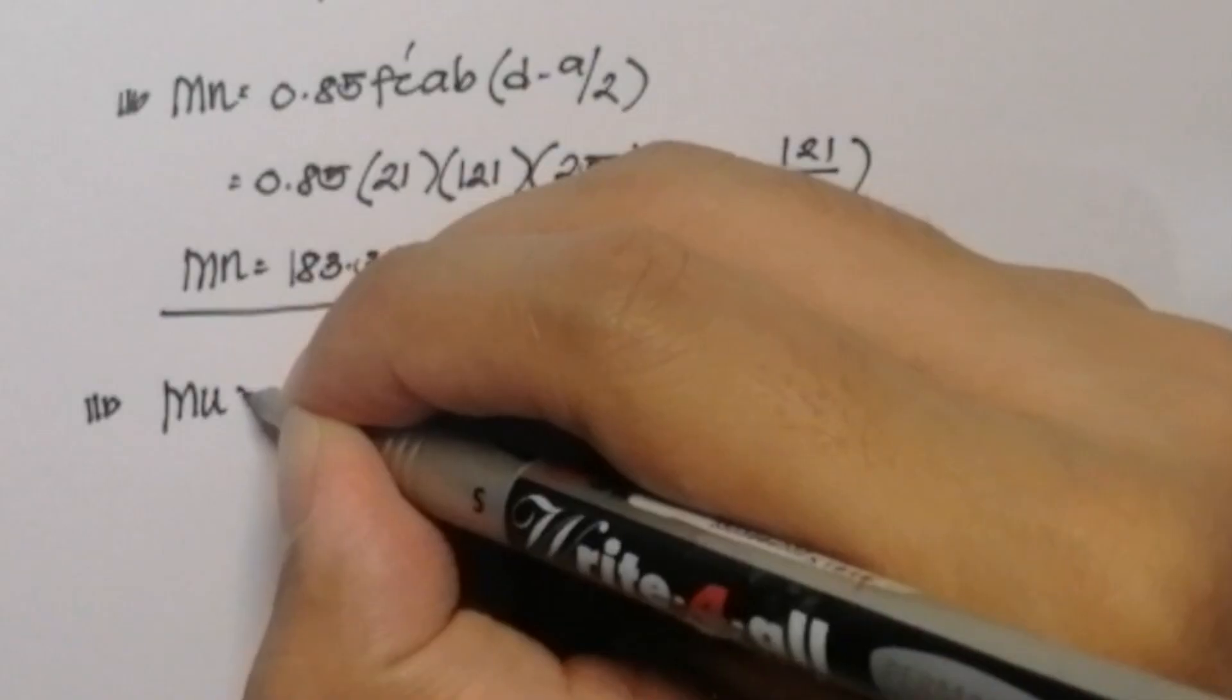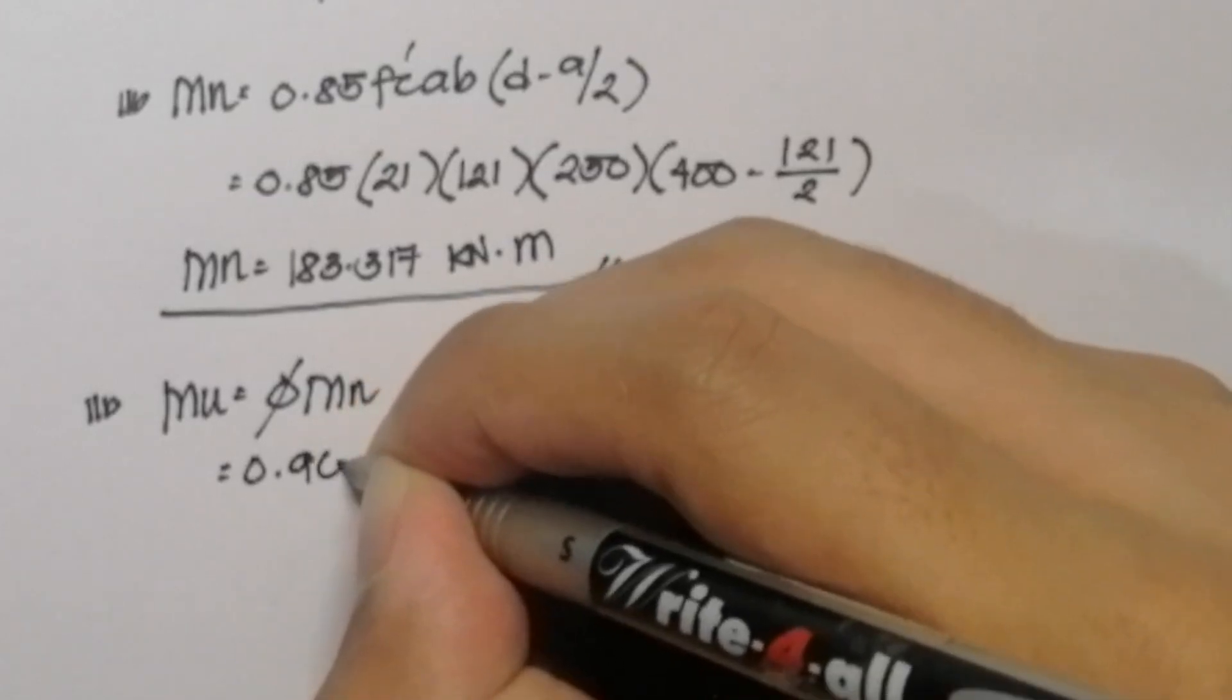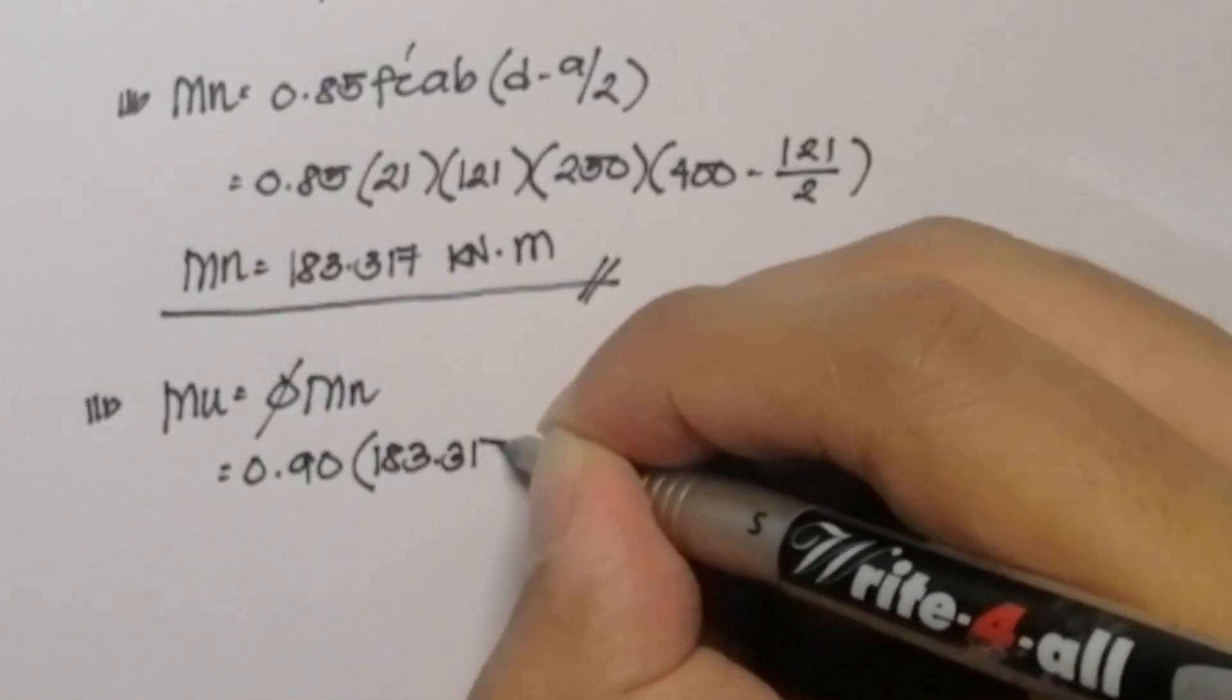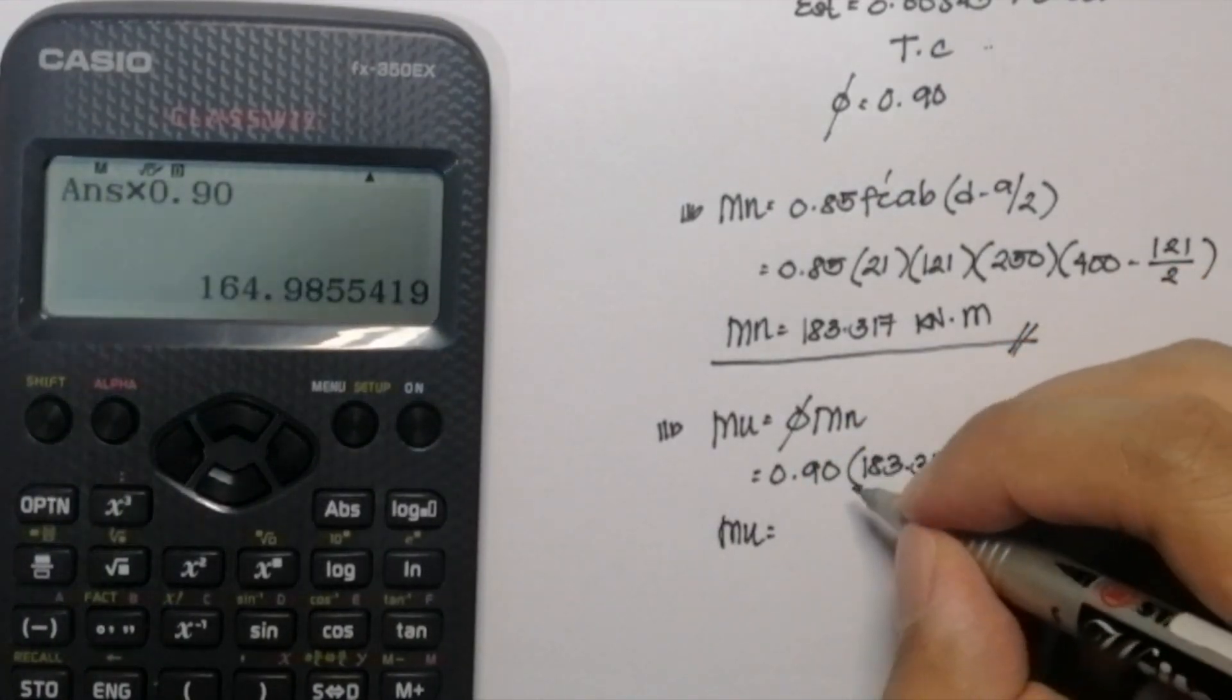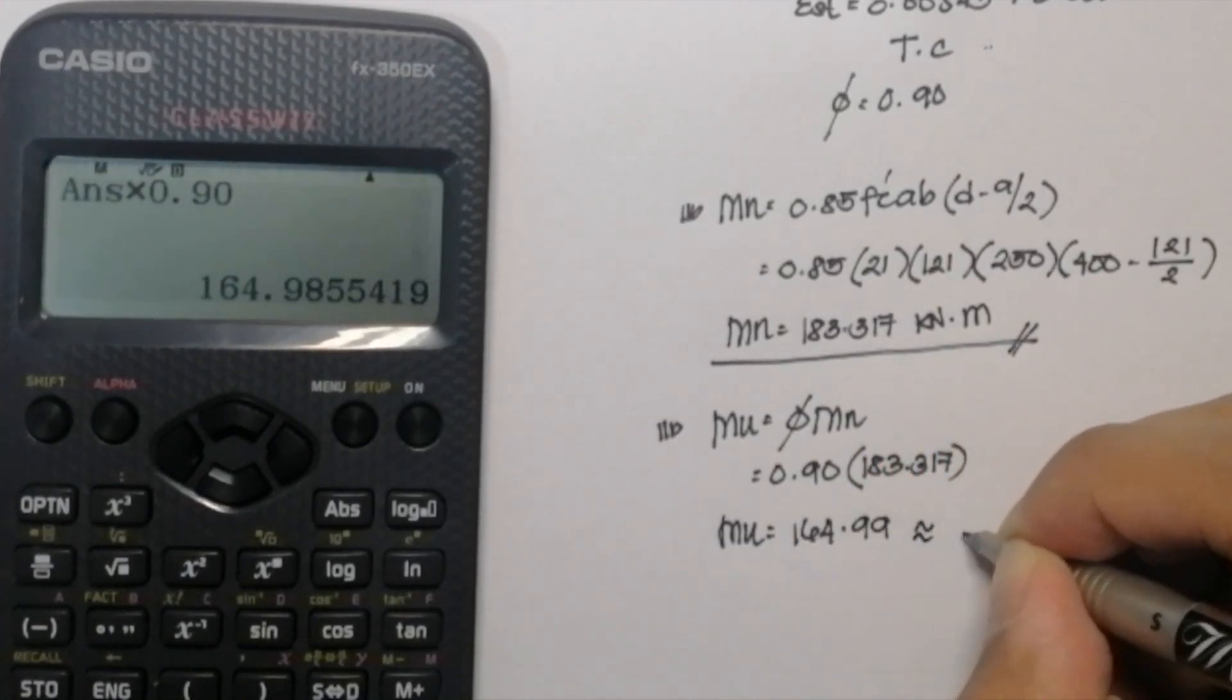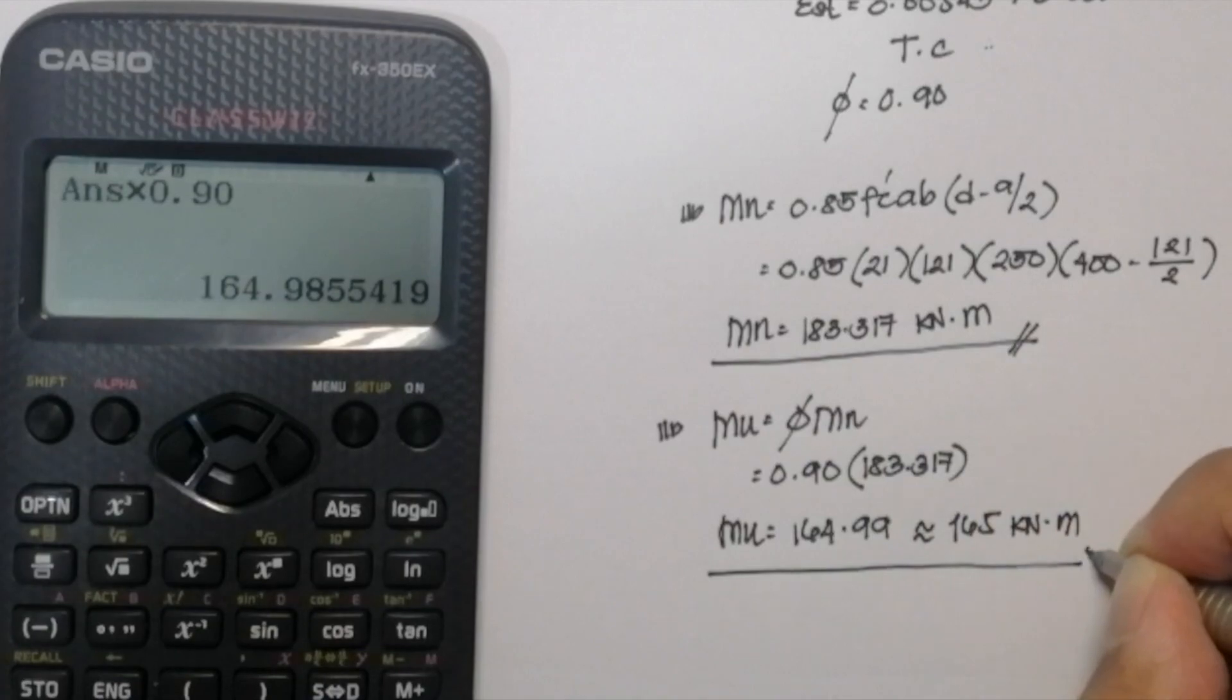Our third question, we need to find the value of the ultimate moment capacity of the beam. And it is just simply by multiplying our nominal moment capacity by the reduction factor of 0.90. So it will be 0.90 multiplied by 183.317. And we get an answer of 164.99 or simply 165 kilonewton meter. And that will be the answer for the third question.